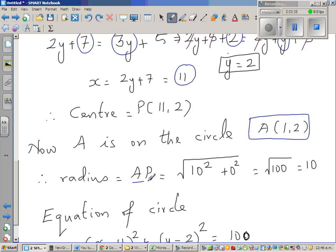So the radius is AP. Using again the distance formula, 11 take away 1 is 10 squared, and 2 minus 2 is 0 squared, which is square root of 100, which is 10. So the radius is 10.